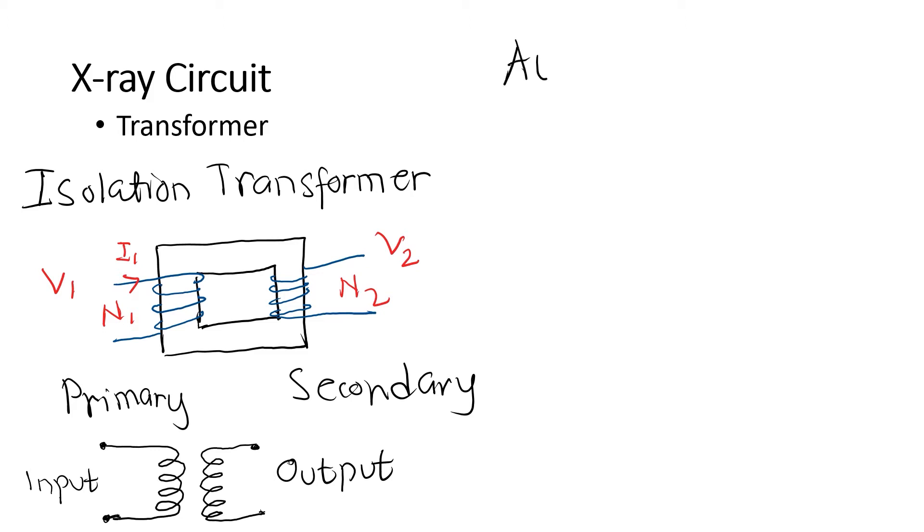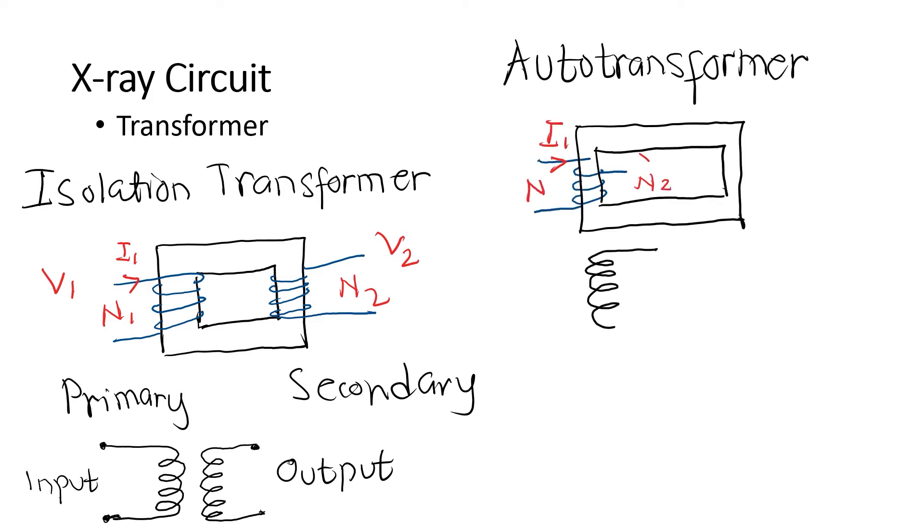Next, we have auto transformers. An auto transformer is an electrical transformer with only one winding. The term auto refers to a single coil acting alone, not to any kind of automatic mechanism.